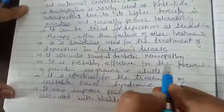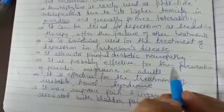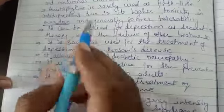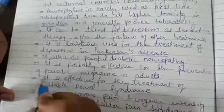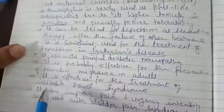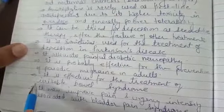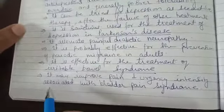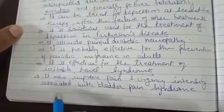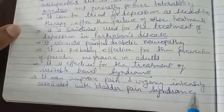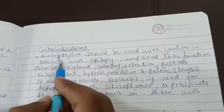It is sometimes used for the treatment of depression in Parkinson's disease. It alleviates painful diabetic neuropathy. When there is neuropathy pain, we can also remove pain. It is probably effective for the prevention of periodic migraine. It is effective for the treatment of irritable bowel syndrome. It may improve pain and urges in bladder pain syndrome.